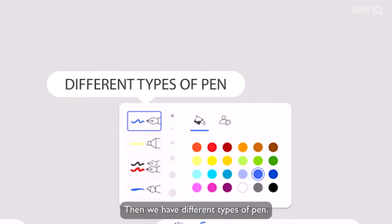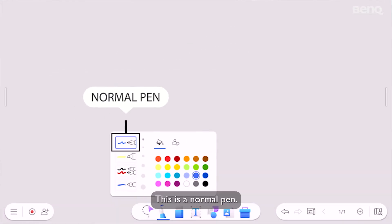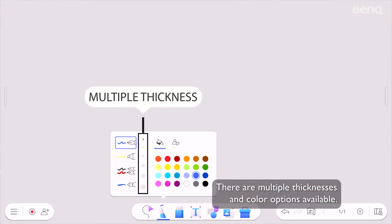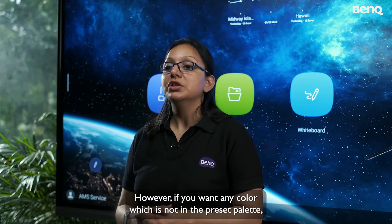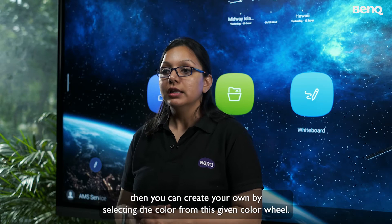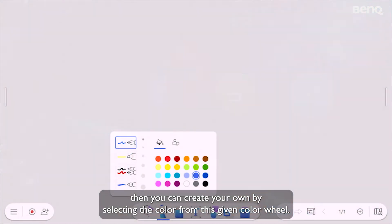Then we have different types of pen. This is a normal pen. There are multiple thicknesses and color options available. However, if you want any color which is not in the preset palette, then you can create your own by selecting the color from this given color wheel.